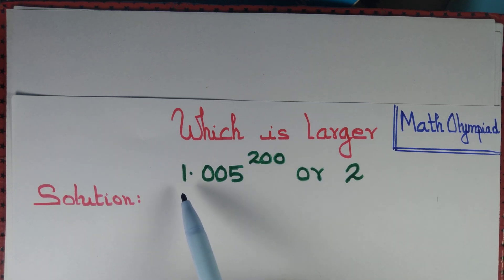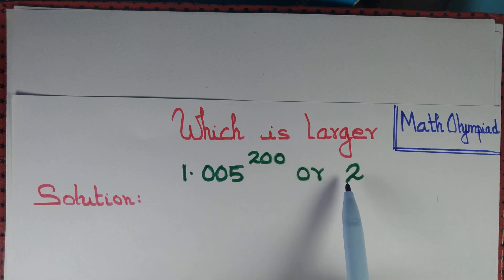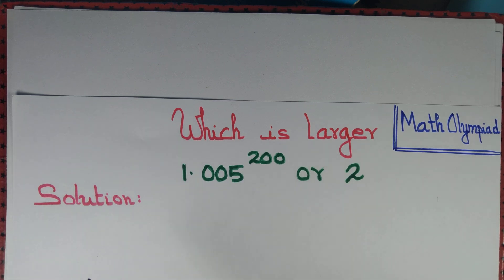Let us try to determine which one is bigger: 1.005 to the power 200 or 2. The question is pretty simple if you know binomial expansion.